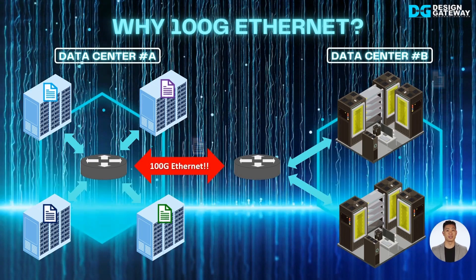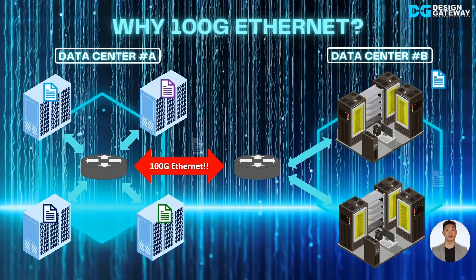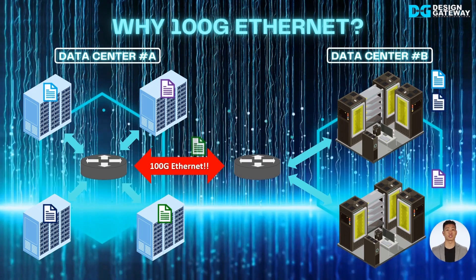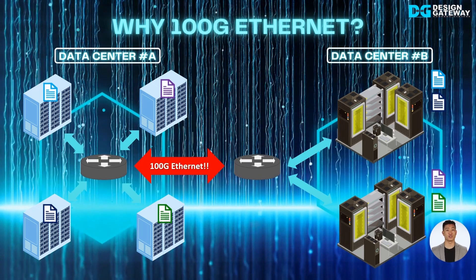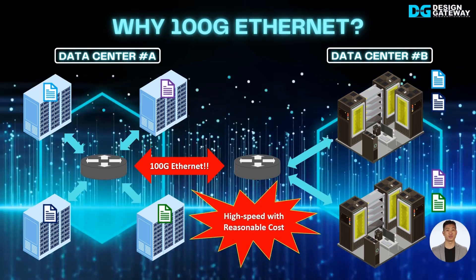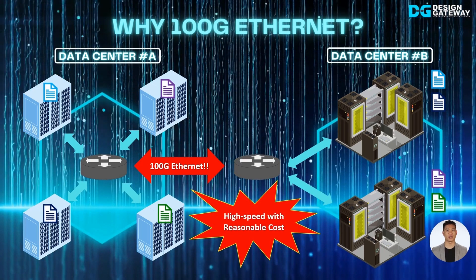100G Ethernet connection is the ideal solution for solving the large amount of data problem in the data center. Supporting 100 Gigabit per second for transferring data with reasonable infrastructure costs satisfies the data center's requirements.